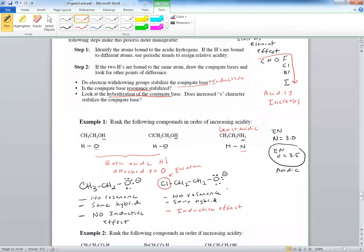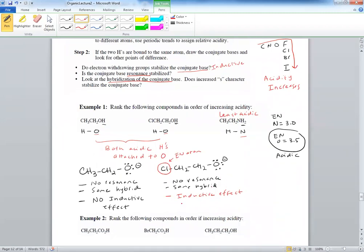Well, now the inductive effect does what? Well, what happens is that the CL stabilizes this O, this electron density on O, the conjugate base, by drawing the negative charge or electron density, let's put it this way.